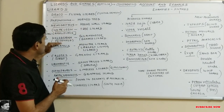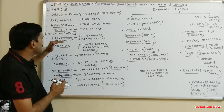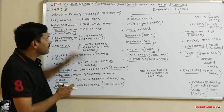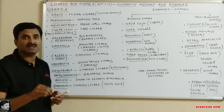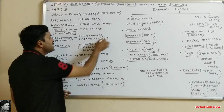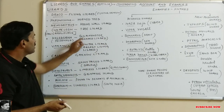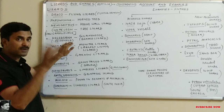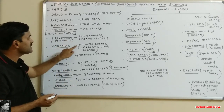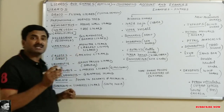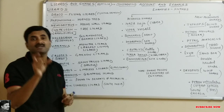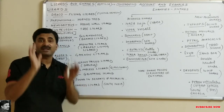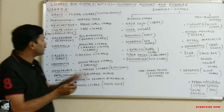Heloderma is a poisonous lizard also called the gila monster. Bead-like structures are found on its skin, which is why it is also called the beaded lizard. Normally it doesn't bite, but when it bites a human its bite is fatal and can cause death due to its poison. Varanus, called the monitor lizard, is the largest living lizard. The species Varanus komodoensis has a weight of 100 kg and a length of 2.5 meters.